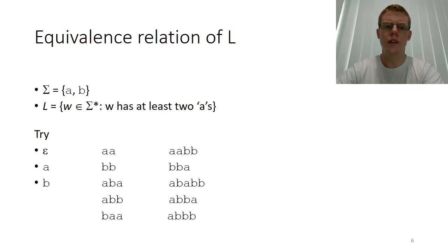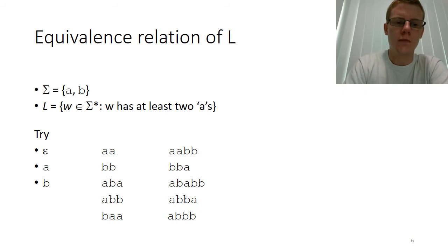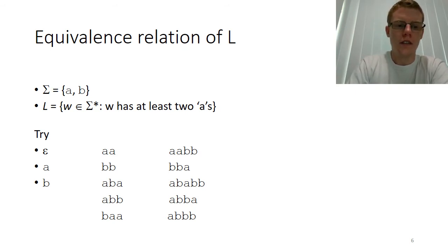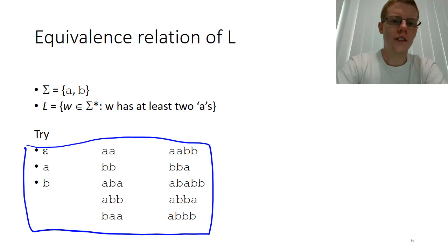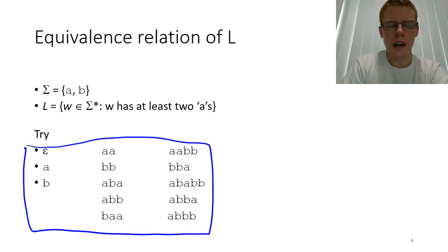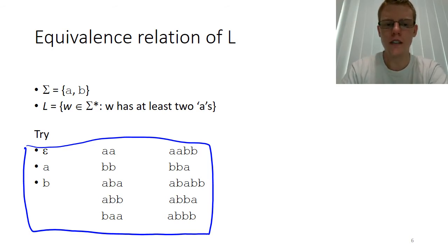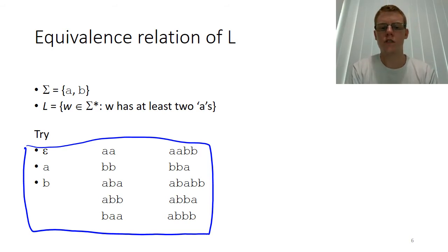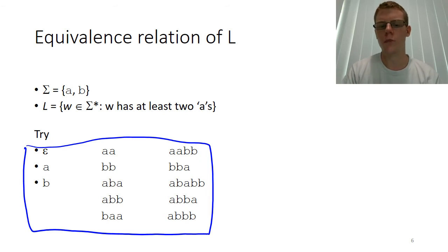To make this idea clearer, consider the language of strings made from A's and B's where the string has at least two A's in it. I've given a set of strings — pause the video and first decide if each string is in L, then look at each pair of strings and think: if I stuck any possible string on the end, would I always either accept or reject regardless of which one I had? Try to figure out which sets of strings are the same with respect to L no matter what you stick on the end — i.e., they have the same future.